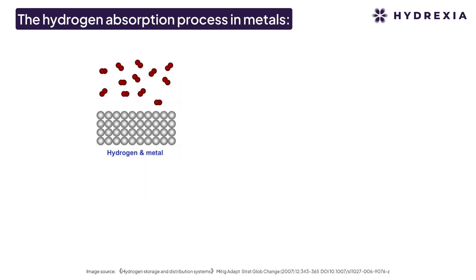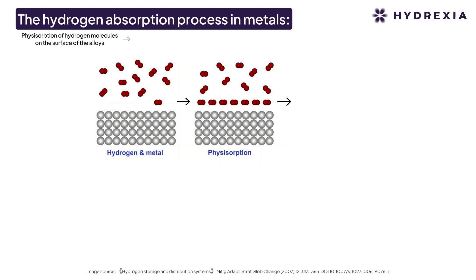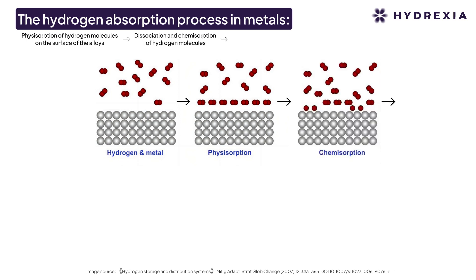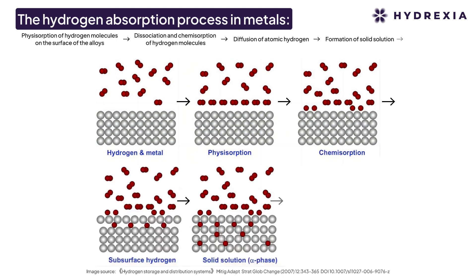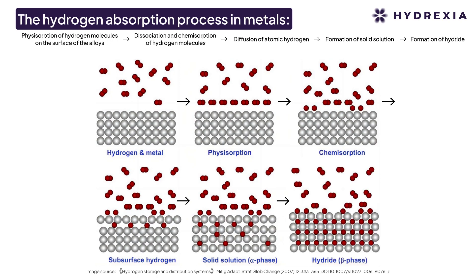The hydrogen absorption process in metals includes physisorption of hydrogen molecules on the surface of the alloys, dissociation and chemisorption of hydrogen molecules, diffusion of atomic hydrogen, formation of solid solution, and formation of hydride.